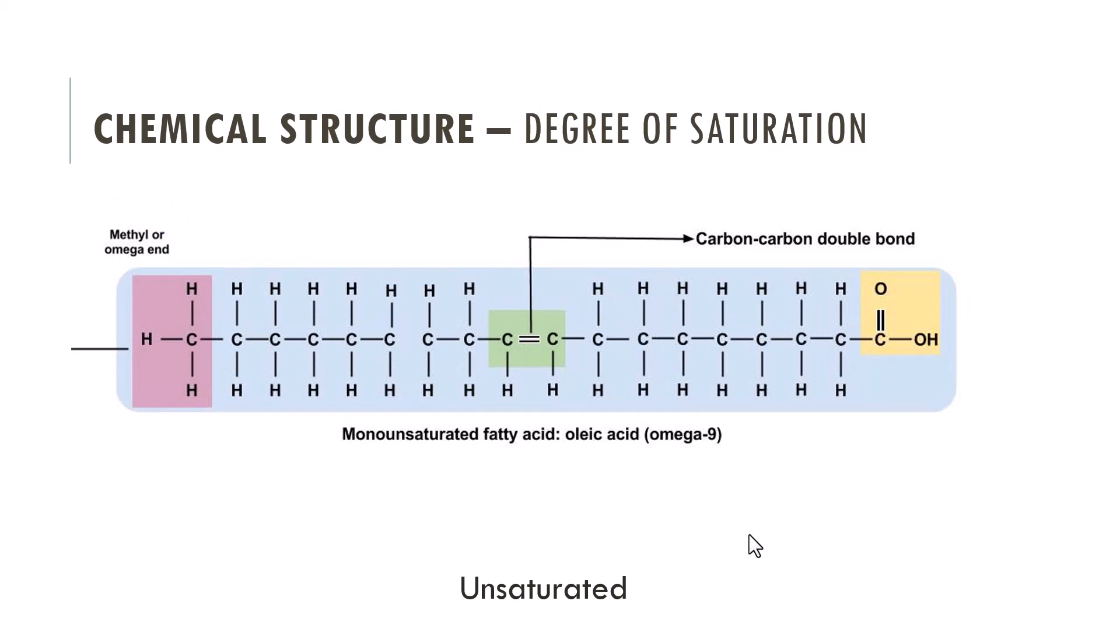I mentioned that it is the degree of saturation that differentiates the fatty acids. Well, that implies there are levels of saturation. Points of unsaturation have missing hydrogens, resulting in a double bond that forms between the two carbons to fill the electrons in the outer shell. There are two missing hydrogens at every point of unsaturation.